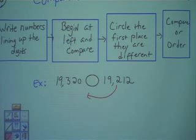I'm going to swing this number up under this one and line up the digits. I'm going to start at the left and compare. The ones are the same. The nines are the same. Here's the first place they're different.